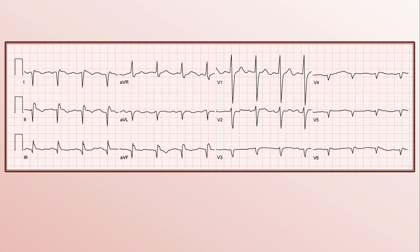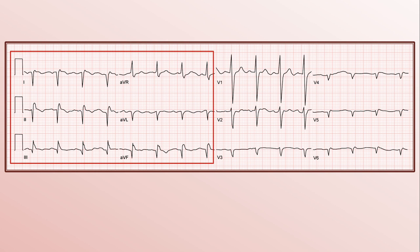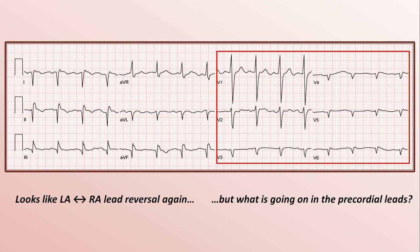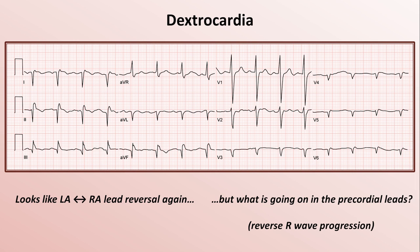We are halfway through at diagnosis number 6: a patient with no cardiac history presenting to the pre-op clinic prior to an elective surgical procedure. Examining just the limb leads, this might look like another case of left arm–right arm lead reversal with a right axis deviation, in this case an axis of about negative 180. But what is going on in the precordial leads? This patient has reverse R-wave progression, in which the R-waves get progressively smaller moving from V1 to V2, and by V3 the R-waves are essentially gone altogether. This is a patient with dextrocardia, in which due to an abnormality in the earliest stages of embryonic development, their heart is literally located on the opposite side of the thorax as a mirror image of the normal heart.